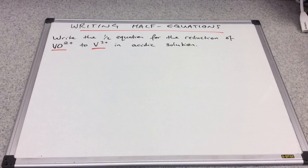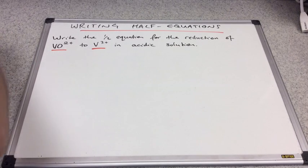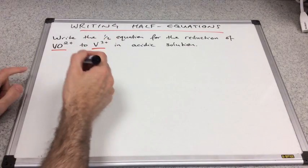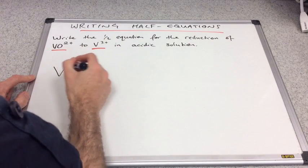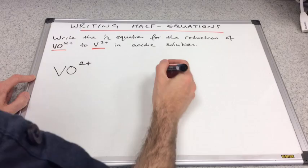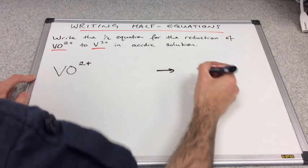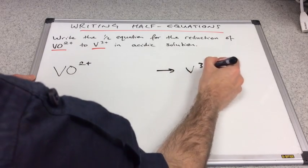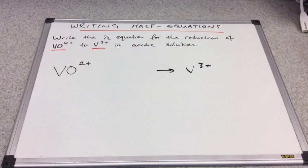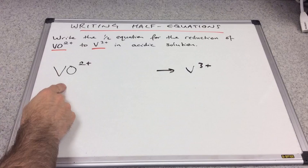So the first thing we need to do is we need to write down what we know. So we know that the VO2 plus ion is going to be turned into the V3 plus ion. We then have to follow some rules. If you follow the rules to the letter, you won't ever get these wrong.